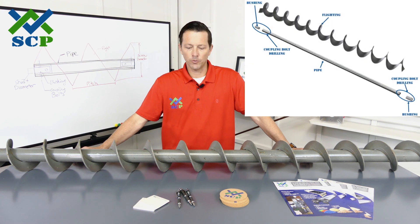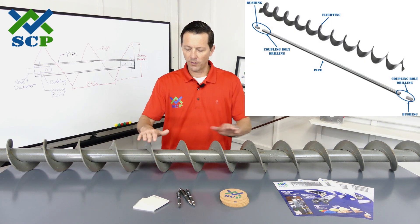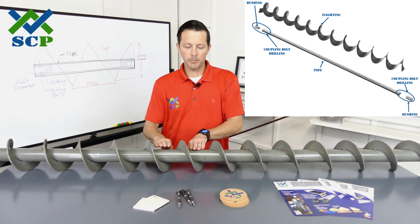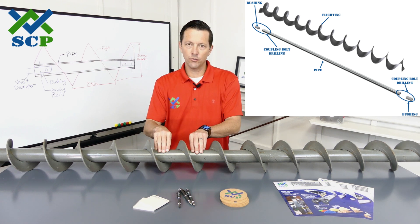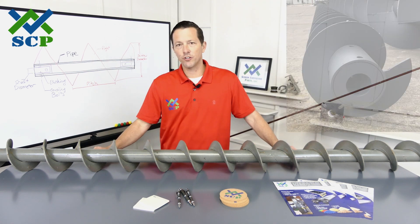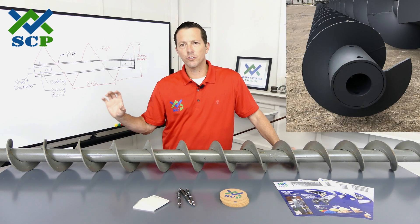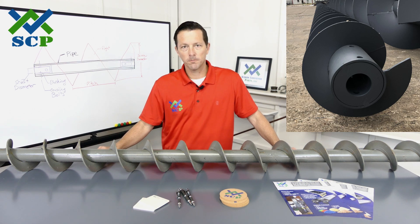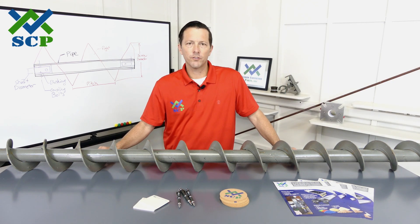There are three basic components to a screw. You have the flighting, which is wrapped around a common piece of pipe — in this case a two inch schedule 40 pipe — and then at the ends we have bushings to reduce it down to our drive and coupling shaft diameters.